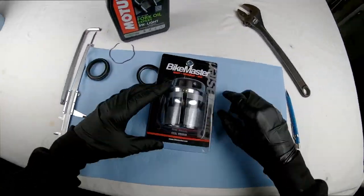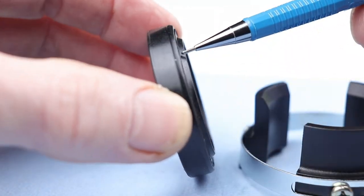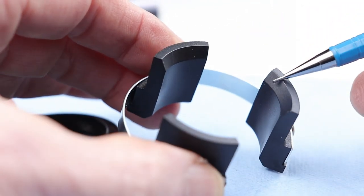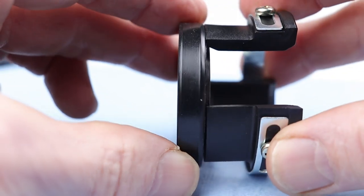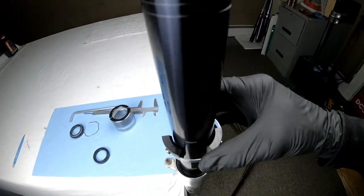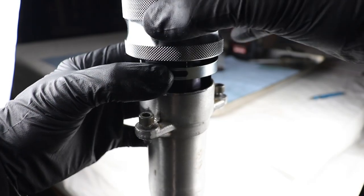All right, we're going to use this Bike Master seal driver. These things are designed perfectly to fit on top of that seal with that beveled edge and the way it seats onto the upper lip of that seal, you're going to have no damage at all. This is an adjustable one from 32 to 47 millimeter. Just slide it in place, start hammering.